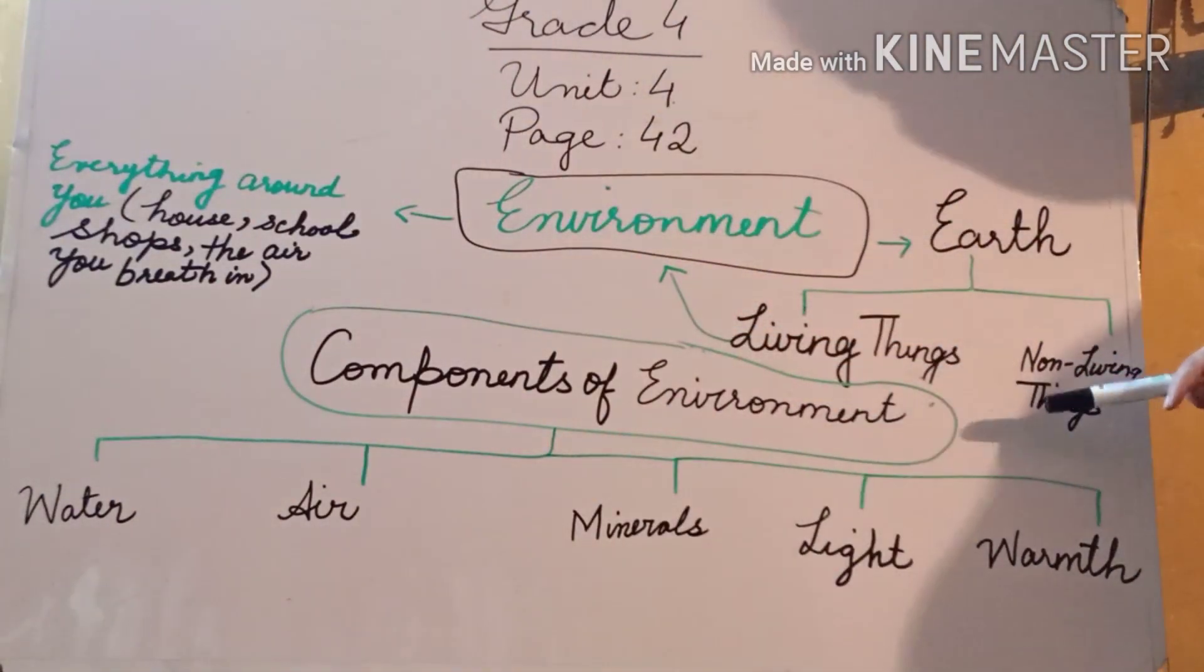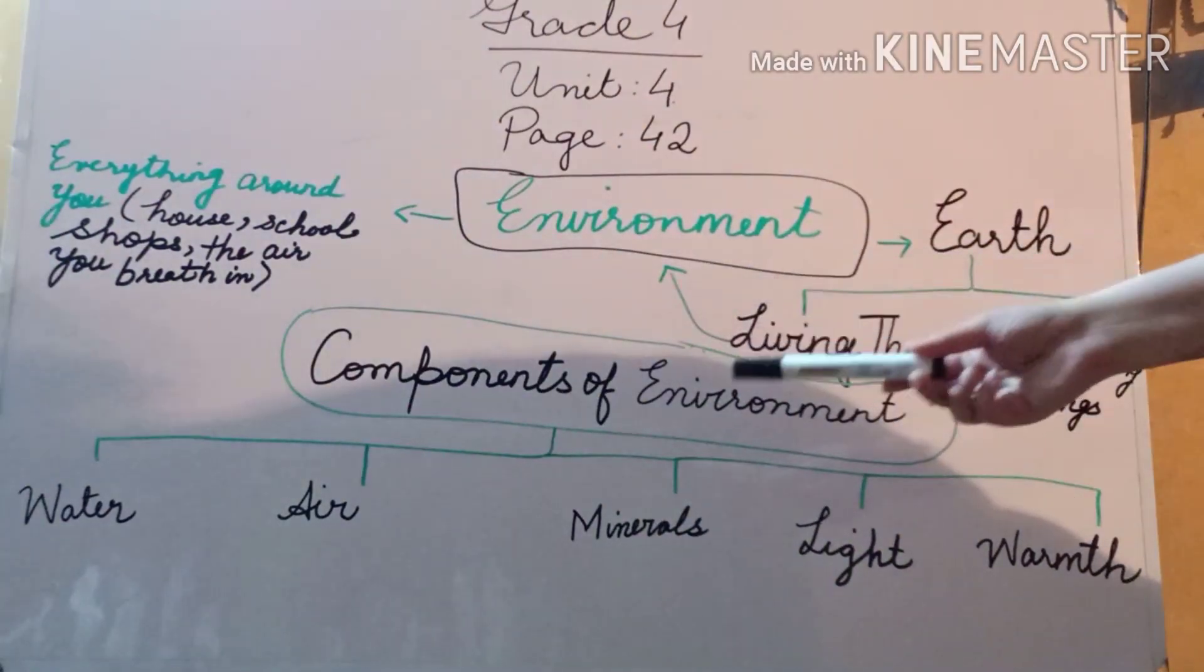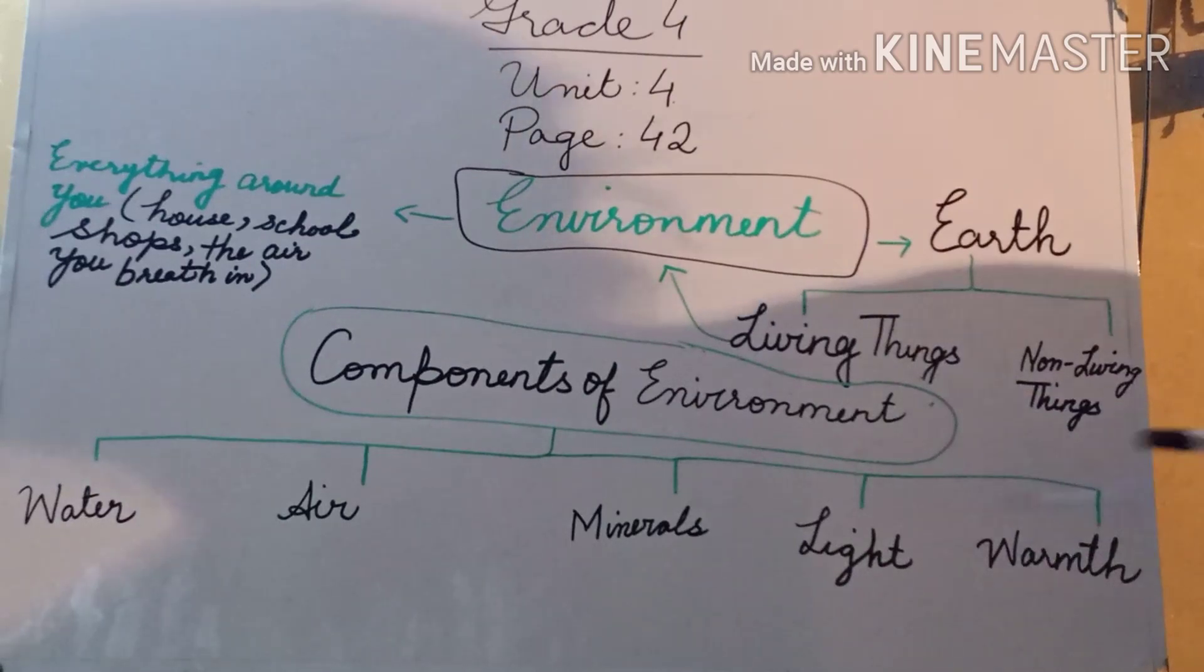When you talk about environment, we are going to talk about components of the environment. Component means basically the parts or the important things that the environment contains. There are basically five components of the environment: water, air, minerals, light, and warmth. We are going to discuss each component of the environment in detail, one by one.